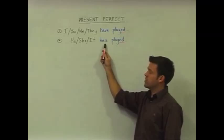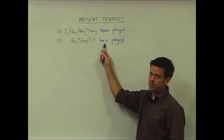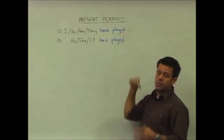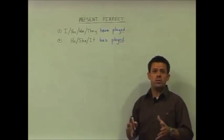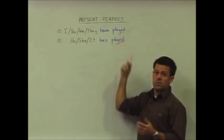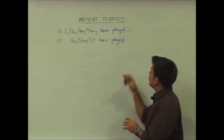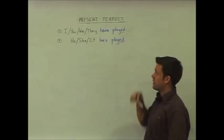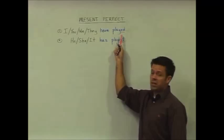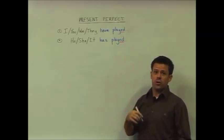For he, she, and it, our auxiliary verb needs to be conjugated or changed into has. Following these helping verbs, we have our main verb in the past tense form, more specifically the past participle form. Here we have the verb to play. To play is a regular verb. So for regular verbs, we simply add ed. The result is sentences such as, I have played football today or he has played snooker today.